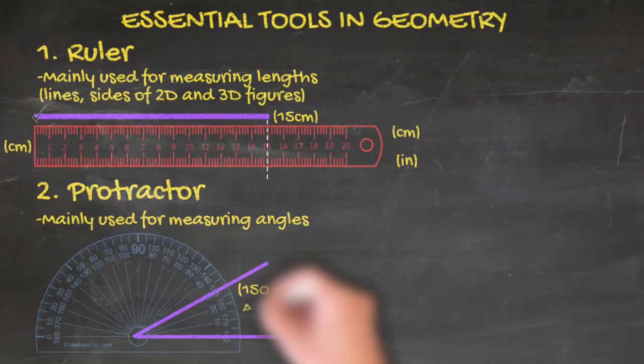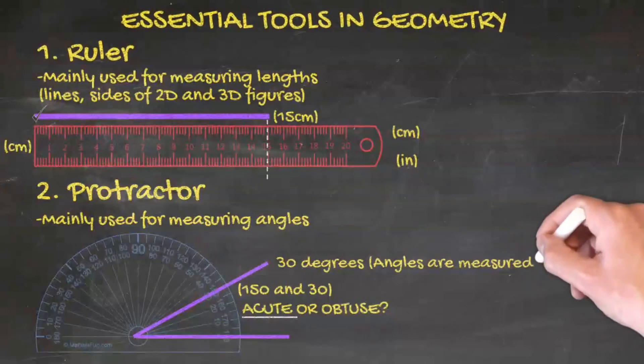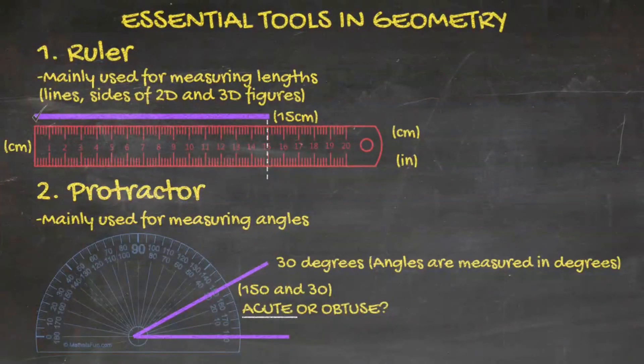To determine the size, we need to know if the angle is acute or obtuse. We can see here that it is acute, and therefore, the size of the angle is 30 degrees. By the way, it is measured in degrees as angles are measured in degrees.